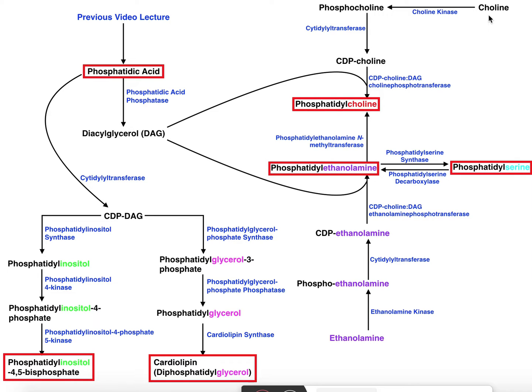But first we have to introduce the activation of the head groups before we talk about how DAG gets incorporated. So let's start at the top here. Our first head group is choline. To get the CDP attached to it, we have to use the enzyme choline kinase. That's just going to use ATP to phosphorylate choline to make phosphocholine. Then we're going to use a similar enzyme, also a cytidylyl transferase. This is going to transfer a CMP group, cytidine monophosphate, from CTP onto the phosphocholine to make CDP choline.